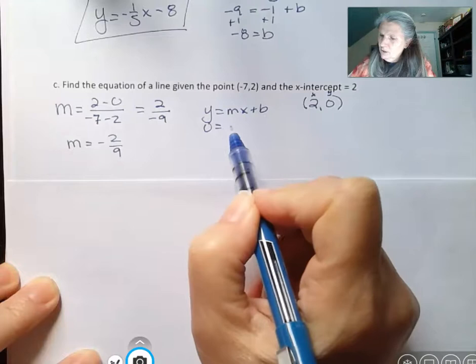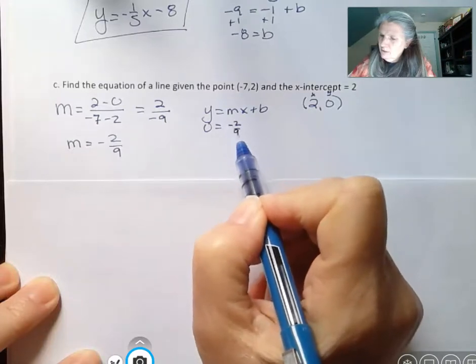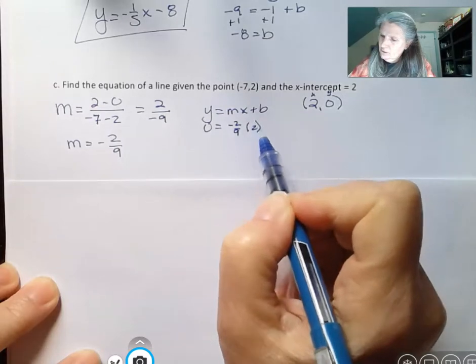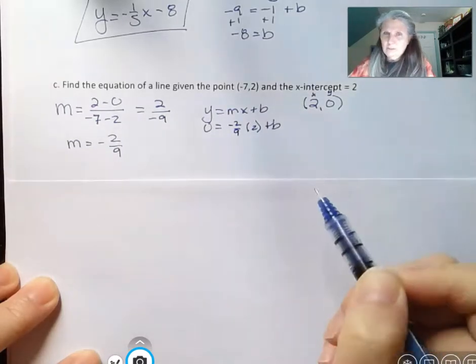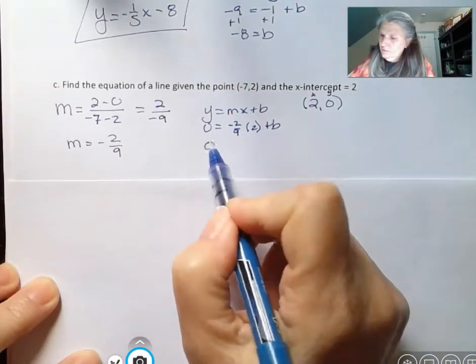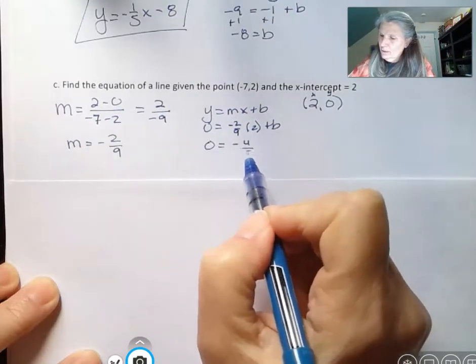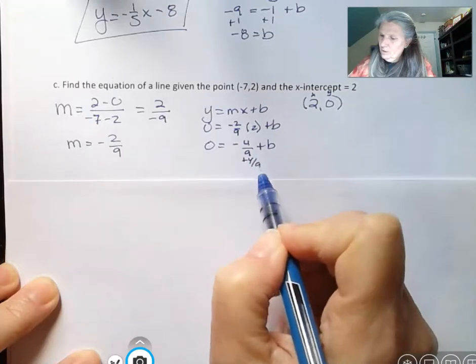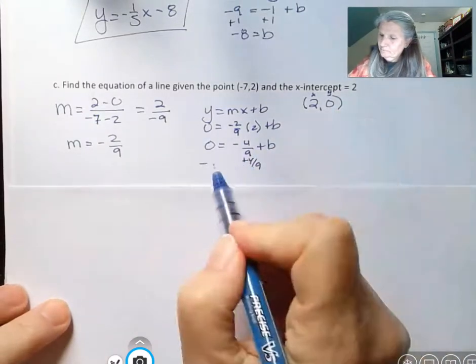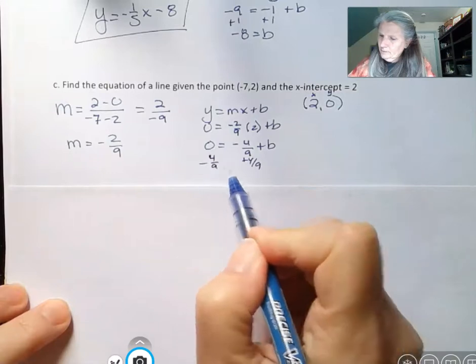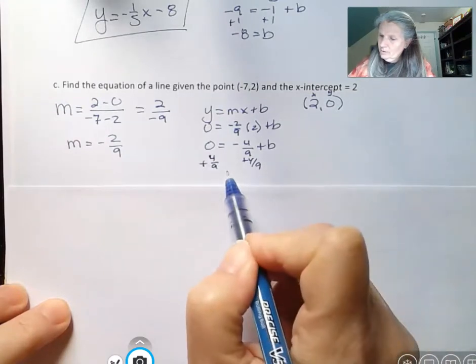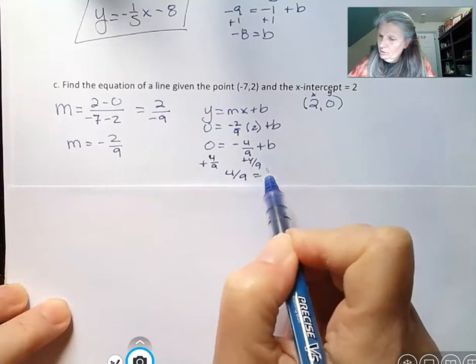My y is 0. My slope is negative 2 ninths. And my x is 2 plus b. So if I simplify that, I get negative 4 ninths plus b. And if I bring that 4 ninths to the other side, I get that b equals, that should be positive, right? 4 ninths equals b.